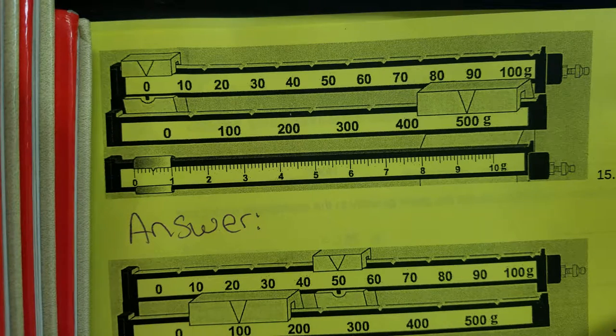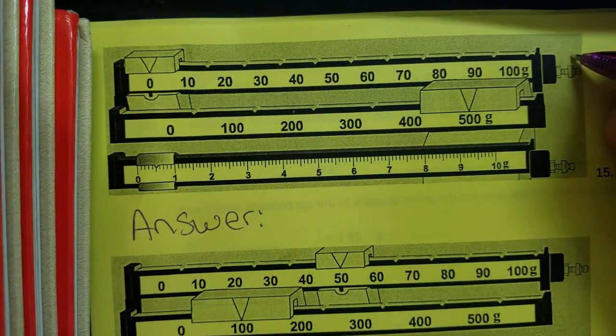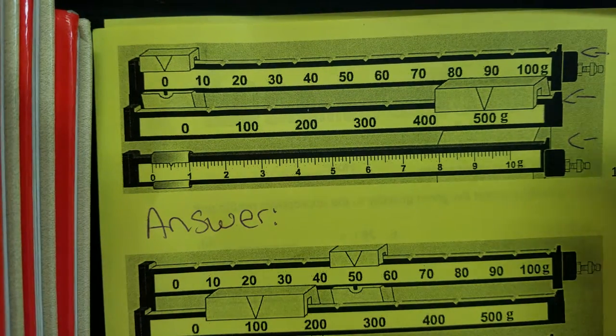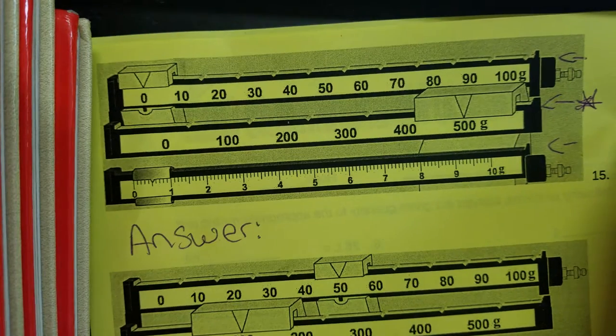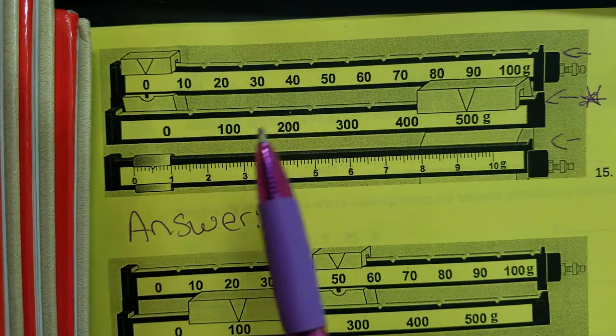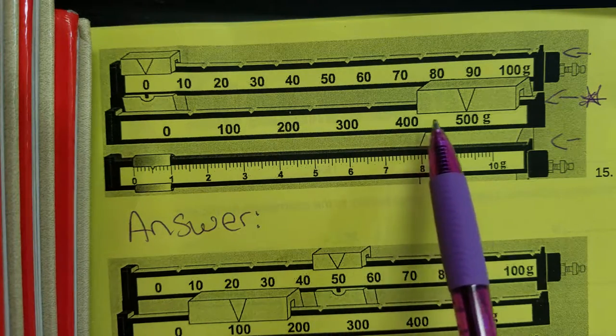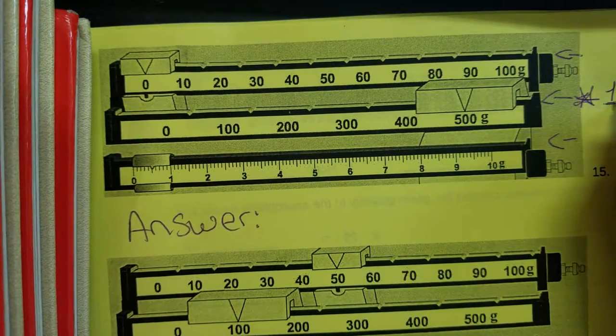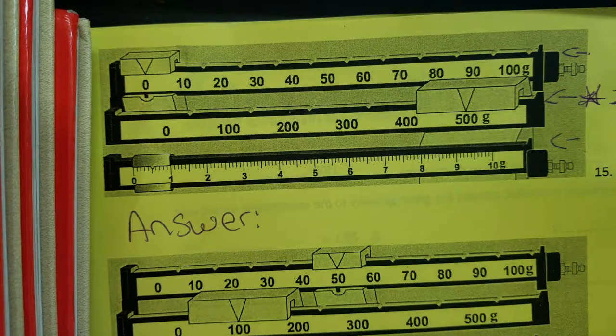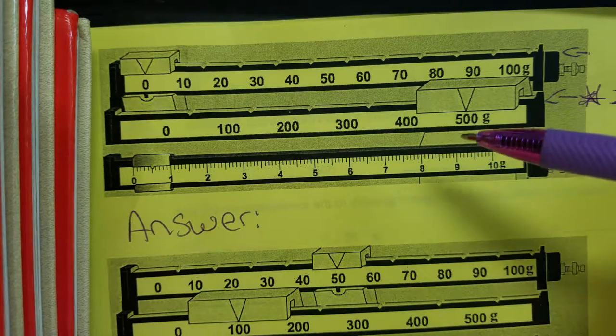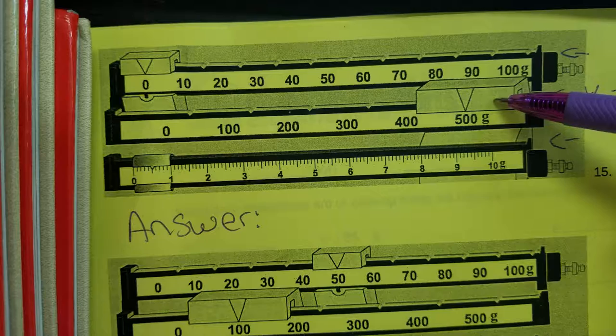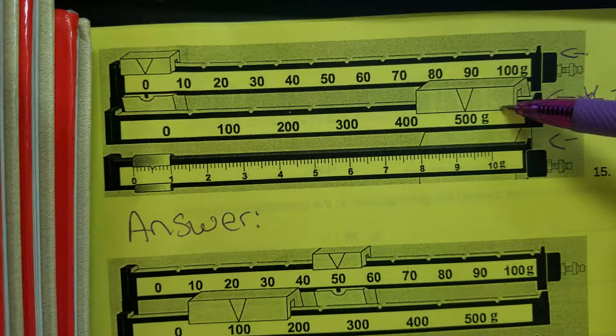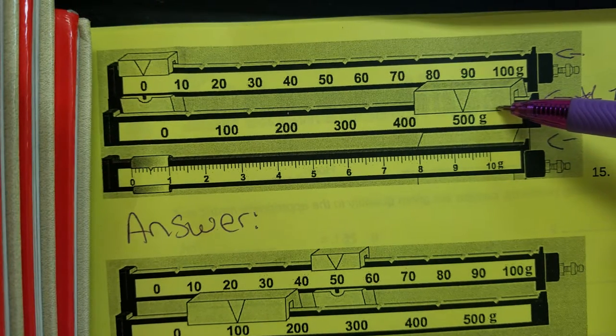Step one, we want to make sure that we look at all three measurements. Now here's where it gets a little tricky - we actually want to start with the middle measurement. Why? Because this has the biggest numbers. It goes from 0, 100, 200, 300, 400, 500 grams. That's what the G stands for. For number one that we're looking at on our Google Classroom document, it says that this is reading where the arrow's pointing - 500 grams. So we know that this first beam is 500 and something grams.